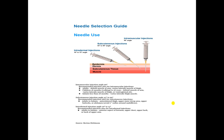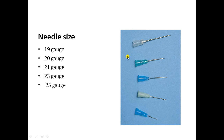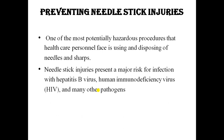Needle use is determined by the type of injection — intramuscular, subcutaneous, or intradermal — and we select the needle accordingly. Common gauge examples include 19, 20, 21, 23, and 25 gauge, covering the range of syringe and needle options discussed.